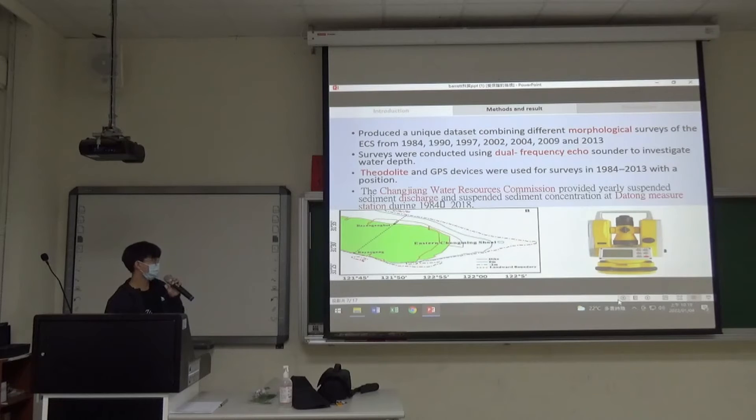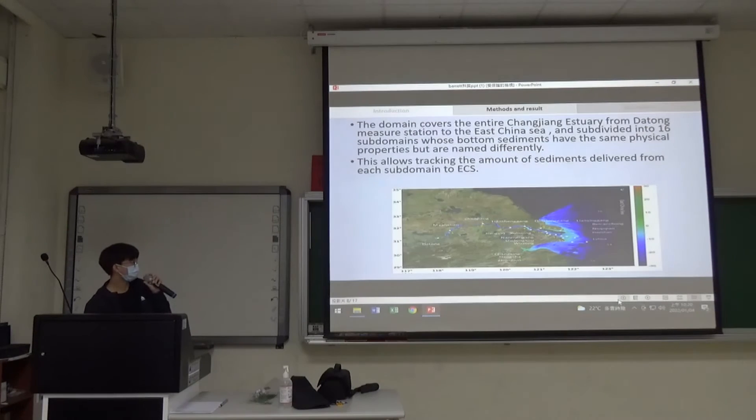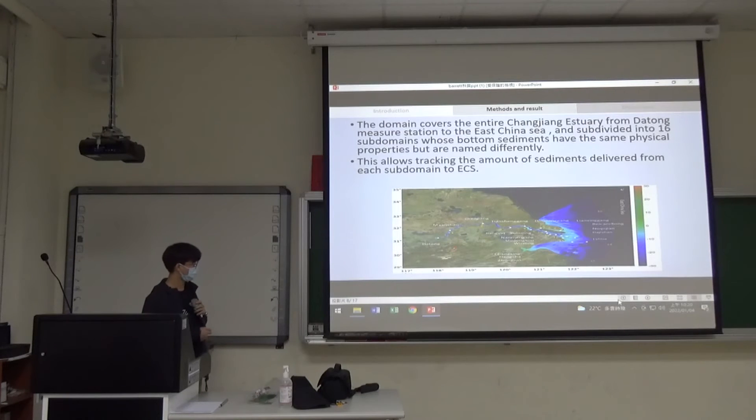The Changjiang Water Resources Commission provided yearly suspended sediment discharge and concentration data. This is a China government institution. Sediment discharge measurements were taken from Datong station during 1984 to 2018. Here is a picture of Datong station and the East China Sea. The research divided the area from Datong station to East China Sea into 16 stations, each with the same physical properties. This allows checking the amount of sediment delivered from each station to ECS.